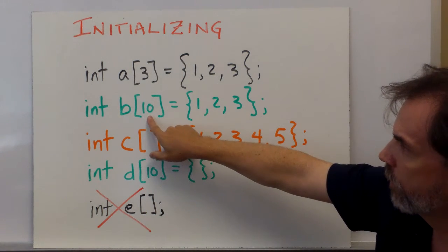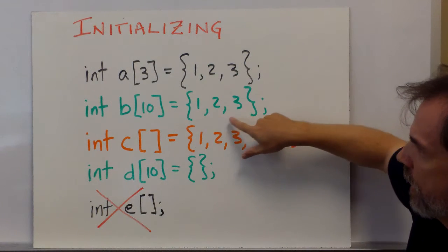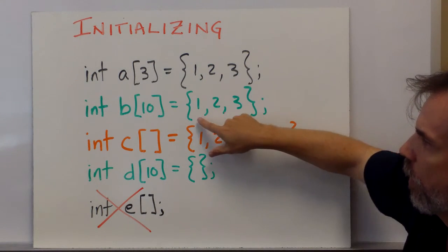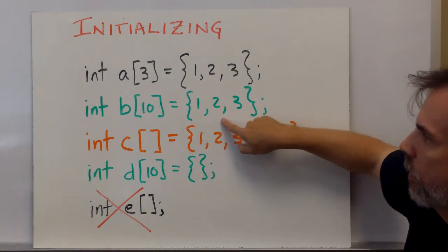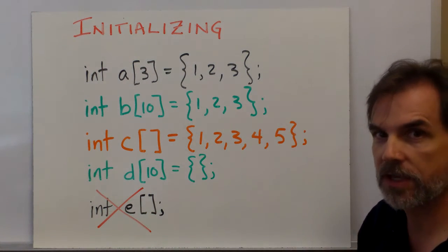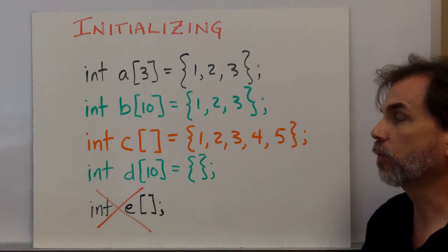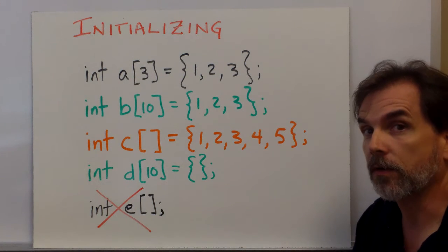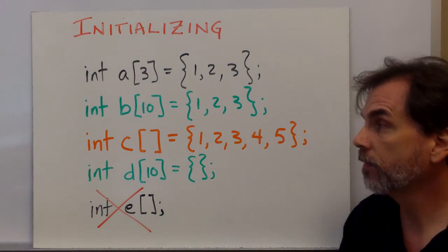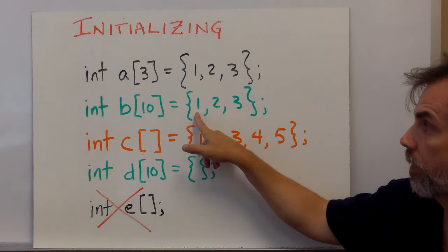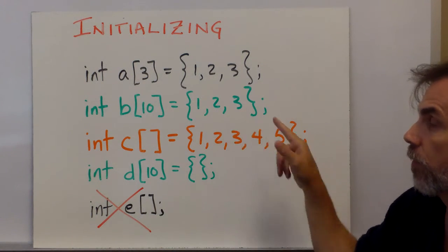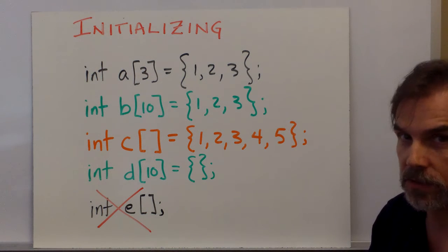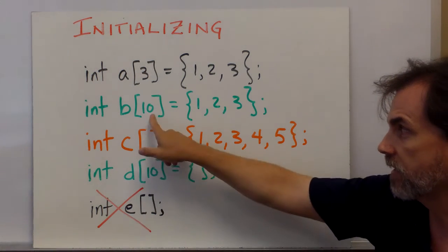Now what happens if the number over here, the size, doesn't line up with the number over here? Well, in this case, I said B has ten elements, but I've only given three initialization values. The compiler will fill in the rest of the array with zeros. So B will look like element zero is one, element one is two, element two is three, element four is zero, five is zero, six is zero, and so on, up to ten elements.